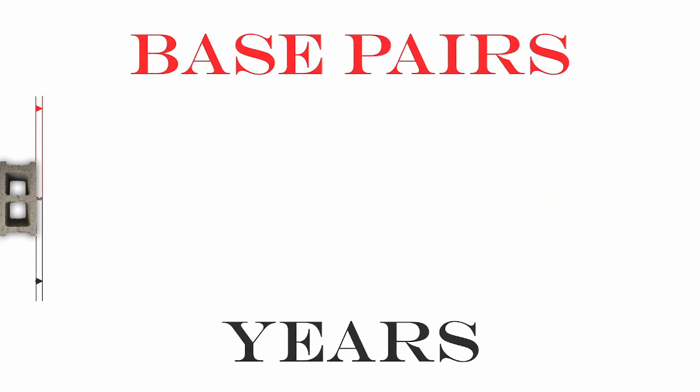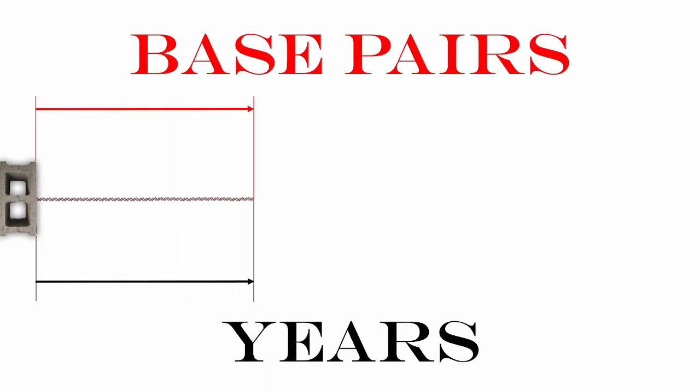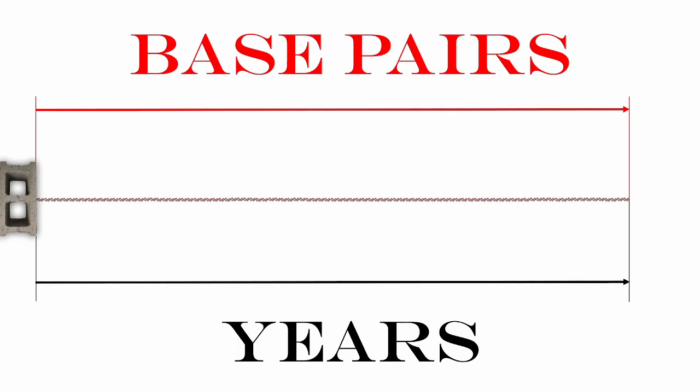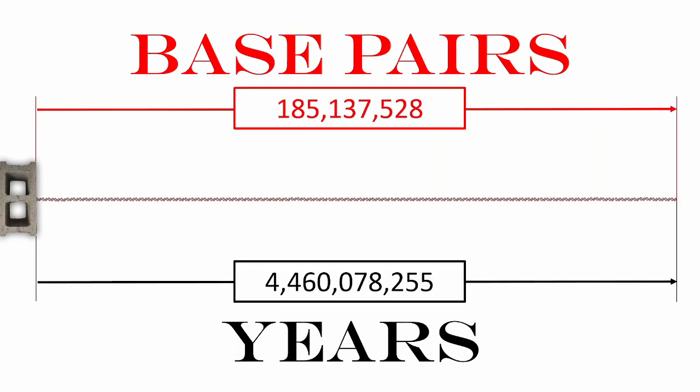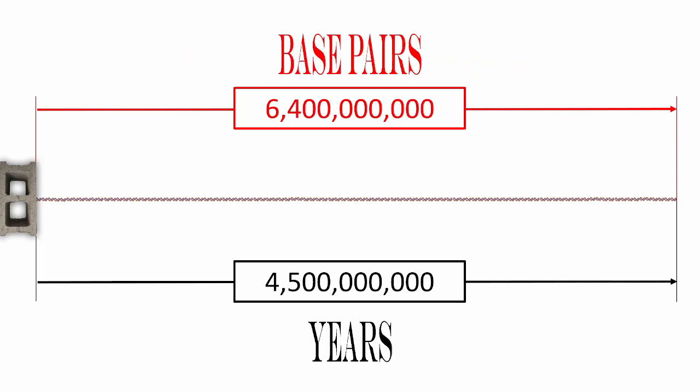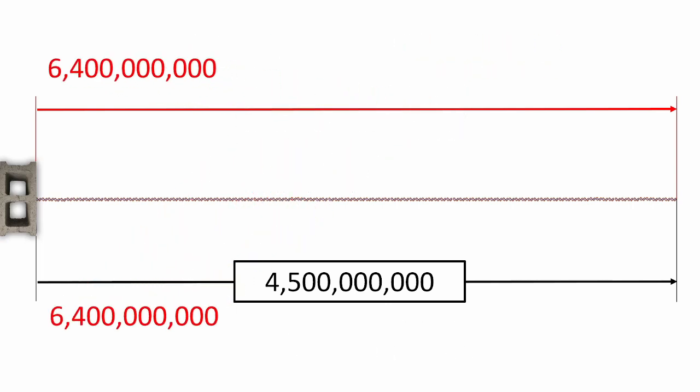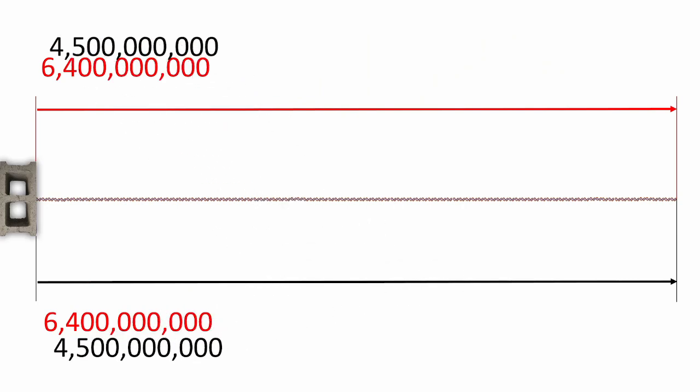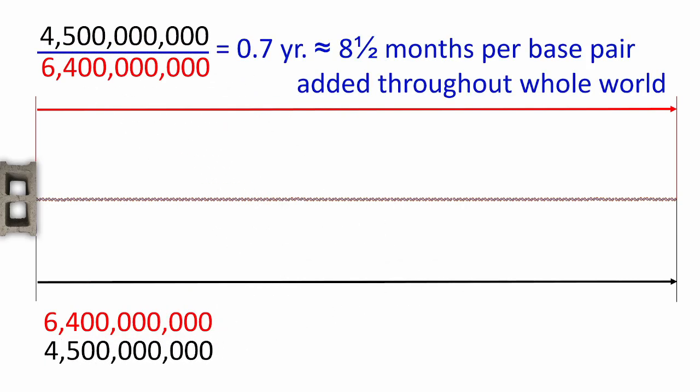Evolutionists don't claim that life was evolving as long as the Earth has been around, but let's make that big round-up, benefit-of-the-doubt, simplification. So, this supposedly enormous 4.5 billion year age of the Earth, how does it compare to the instruction it must explain the existence of? Easy math.